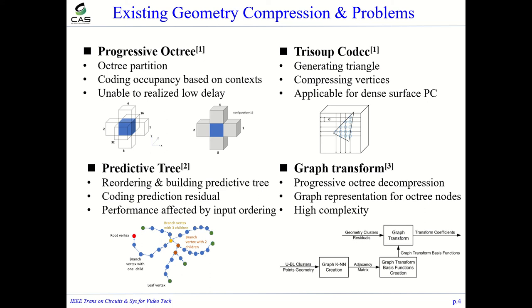Each method is not perfect. For example, predictive tree can realize low delay demand by ordering a part of points, but this method's performance is affected by the input order of points.